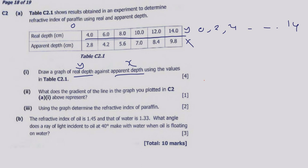As you can see on the right-hand side, the graph is properly scaled. For the x-axis, the apparent depth values go all the way up to 9.8, starting from 2.8. So for this axis we can start from 0 and increase by 1 unit all the way up to 10, which makes it much easier to graph and ensures the graph comes out properly.